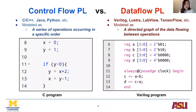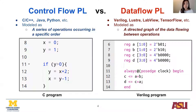Another language family, data flow programming language, was originally designed to exploit parallelism in hardware. Data flow PL has been used in domains like hardware design, like Verilog, as shown in the example here, or system simulation software like LabVIEW. Software defects in data flow PL can lead to severe consequences. Unlike control flow PL, data flow programs are modeled as a directed graph of the data flowing between operations.